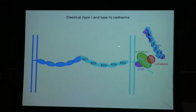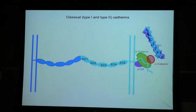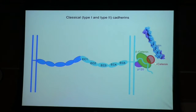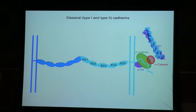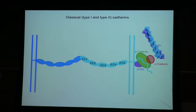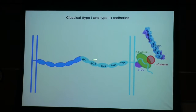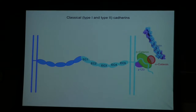In the case of classical cadherins, the extracellular domain is structured while the cytoplasmic domain is not, but it forms complexes with beta-catenin, alpha-catenin, and ultimately links to the actin cytoskeleton. Everything I'll be talking about today involves recognition which takes place outside the cell. I won't be talking about cytoplasmic processes initiated by recognition. The basic question is: how does protein recognition translate into cellular recognition?